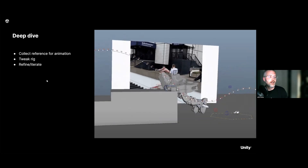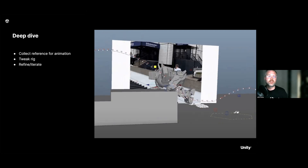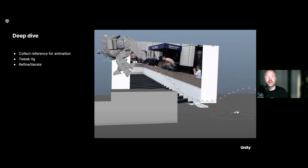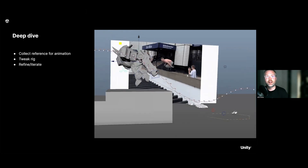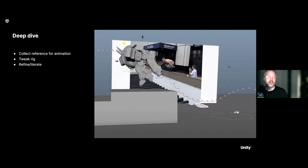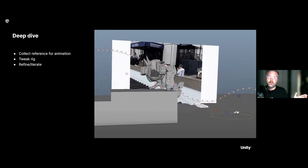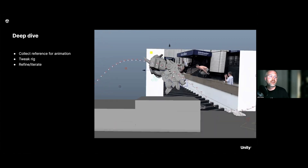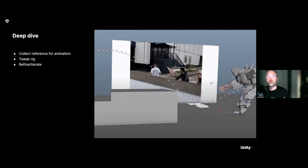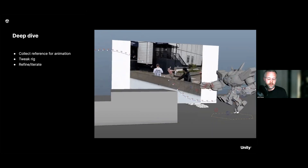Nate also shows a GIF he recorded of his Maya scene with the reference footage playing inside it — an important step to ensure you match the same kinds of poses and timing as the real-life movement, so your animation feels realistic and grounded. There is a point, though, where you need to separate from the reference because of the scale — this is a giant robot. In hindsight, Nate feels he should have made the robot move a bit slower to really nail down that sense of scale.